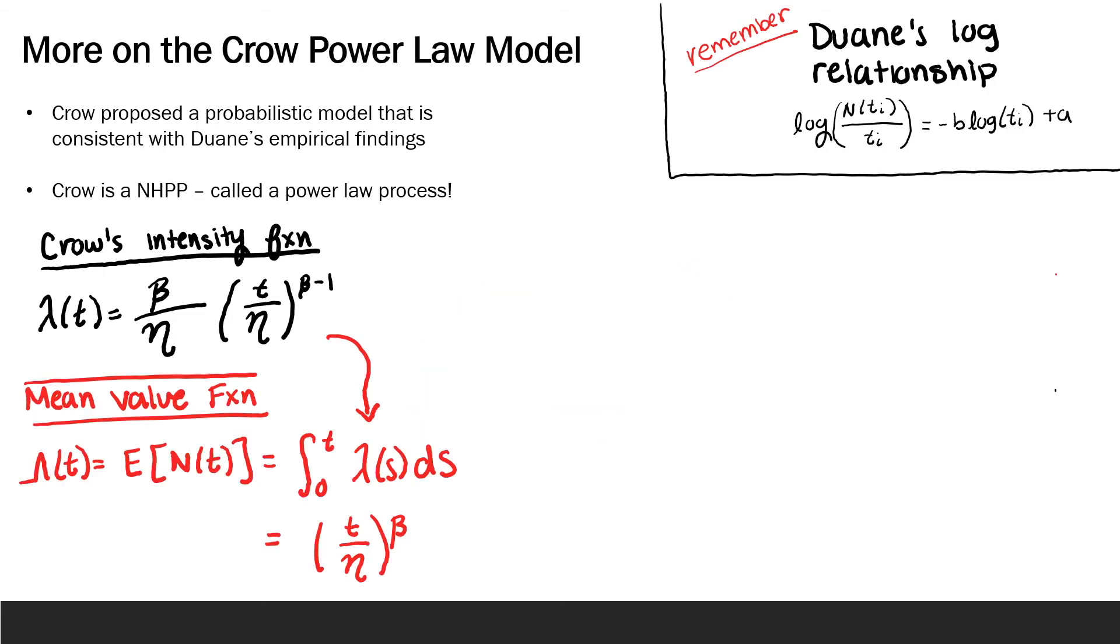For those of you that want to mathematically understand this log relationship, we'll start with the mean value function, which recall is capital Λ(t). And we introduced this in the last module. Recall that we said that the intensity function is equal to the derivative of capital Λ(t). Thus, capital Λ(t) is equal to the integral of the intensity function. So, Crow's mean value function is equal to this expression here, (t/η)^β,